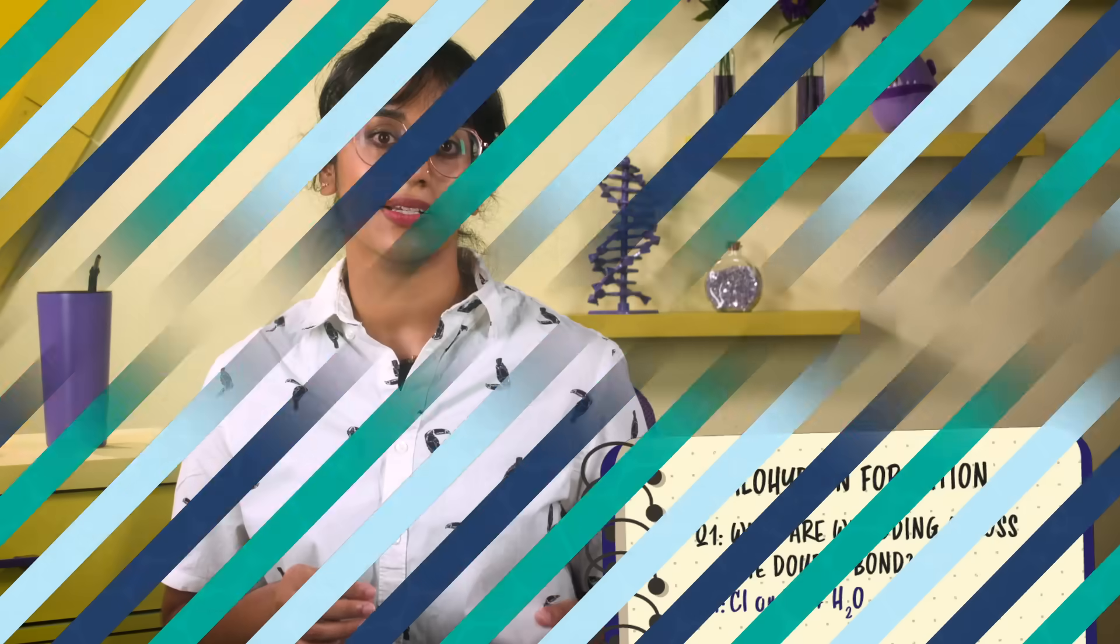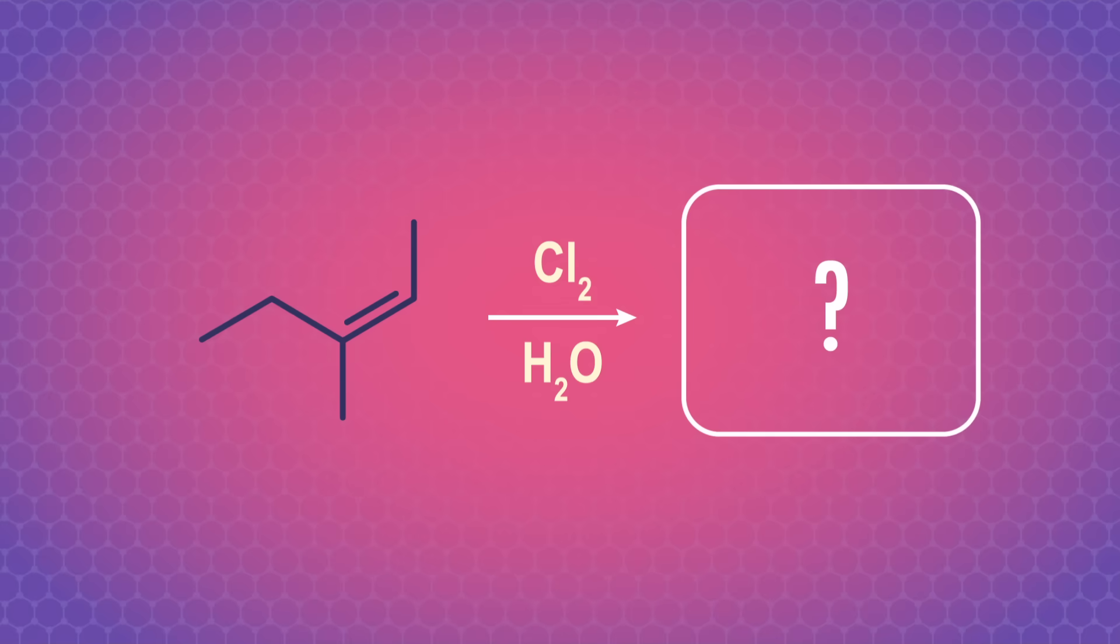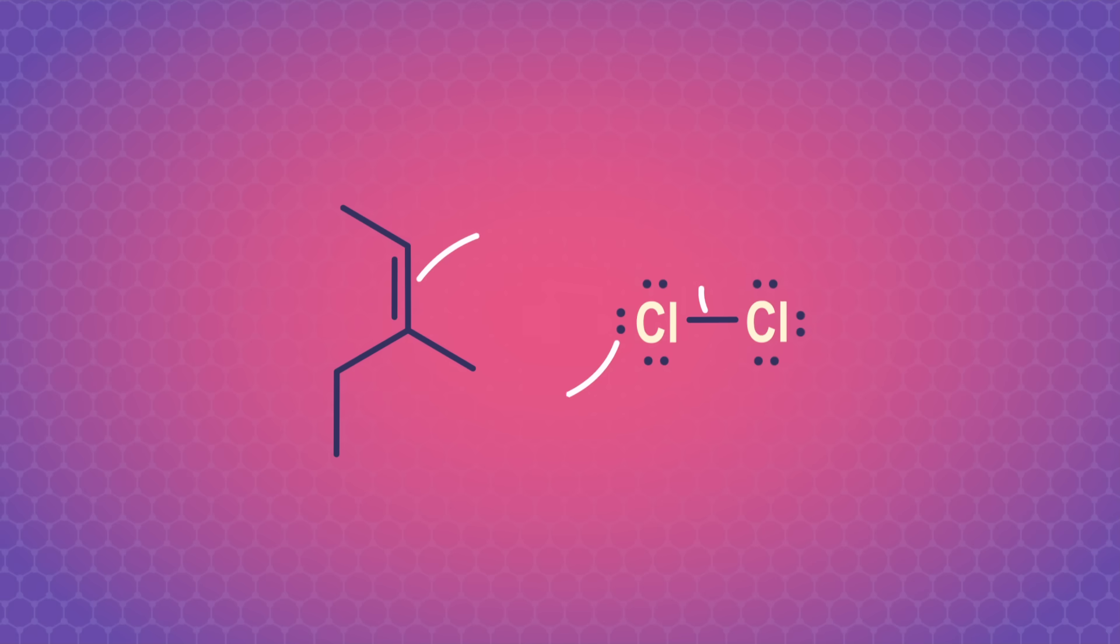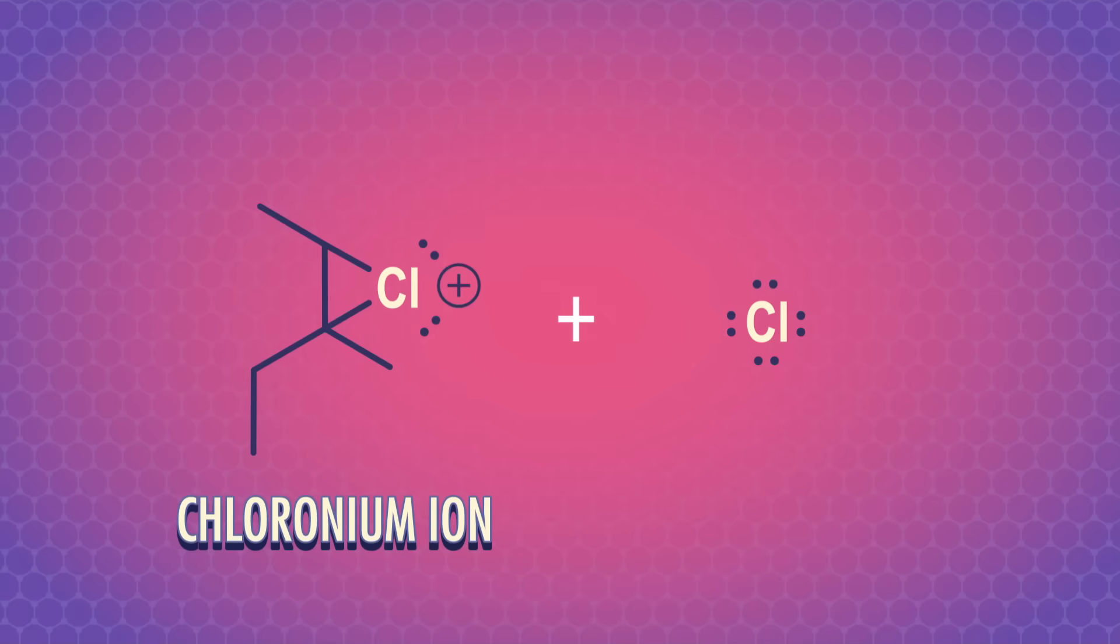Because there are many solvent molecules around, we get a different final product. To see what I mean, let's predict the product if we had an asymmetrical alkene such as Z-3-methylpent-1-ene and react it with molecular chlorine, but this time using water as a solvent. First, the nucleophilic alkene attacks chlorine. Like what we saw with bromination, a chloronium ion forms to stabilize the positive charge.